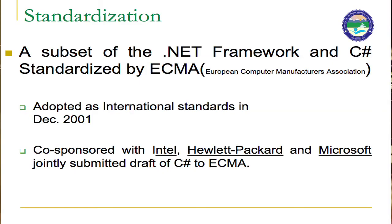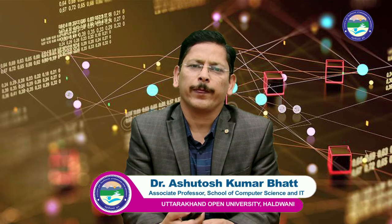You can see the historical development of .NET Framework. C# is standardized by ECMA and is one of the major compilers of .NET technology. When we use VB, it is VB.NET; when we use C#, it is C#.NET; and we also have ASP.NET. C# is the major compiler of the .NET family and is standardized by ECMA — the European Computer Manufacturer Association. It was given international standards in 2001, co-sponsored with Intel, HP, and Microsoft.